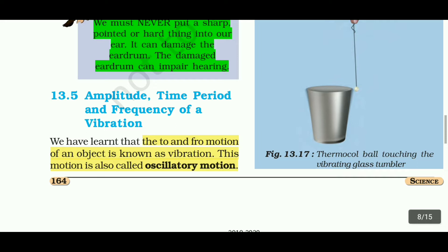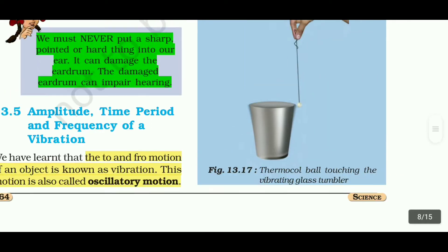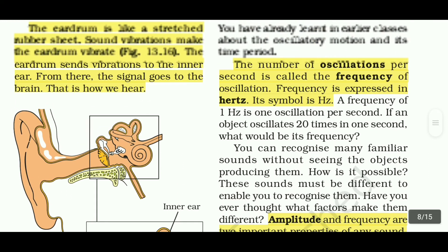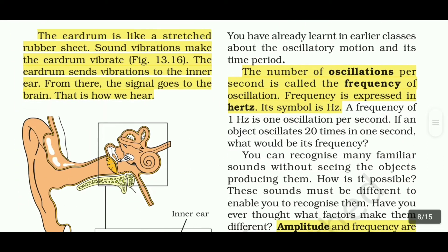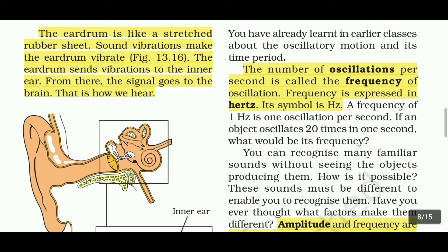First, vibration: the to and fro motion of an object is called vibration. That motion is also called oscillatory motion. The number of oscillations per second is called the frequency of oscillation.